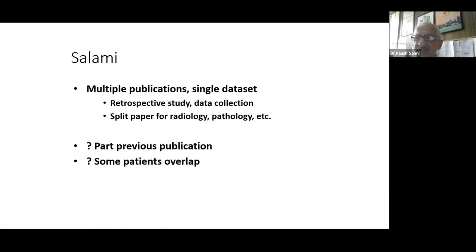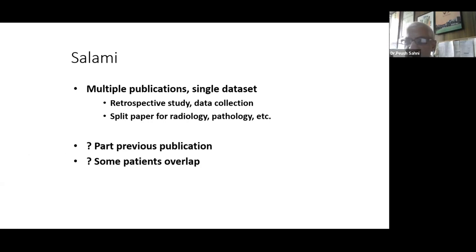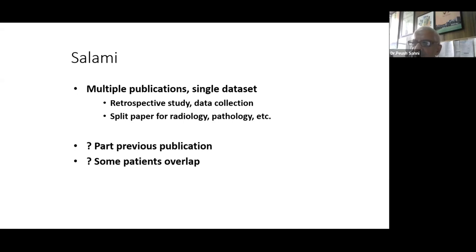What is salami publication? When from a single data set you create multiple publications. This tends to happen with retrospective studies — you split the paper up: information related to radiology, pathology, medical treatment, surgical treatment. From a single data set of say 200 patients, you get four papers. This is not acceptable — it's considered salami publication, an attempt to bolster your CV by doing multiple publications from a single data set.